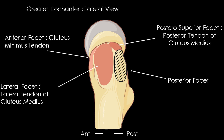The greater trochanter corresponds to a bony eminence of quadrilateral shape located outside the femoral neck. The superficial outer surface is convex and easily palpable under the skin. The bone surface of the greater trochanter consists of four facets: anterior, lateral, posterior, and posterior superior. Three of the four facets give insertion to the tendons of the gluteal muscles. The anterior facet gives insertion to the tendon of the gluteus minimus. The lateral facet gives insertion to the lateral tendinous lamina of the gluteus medius. The posterior superior facet gives insertion to the main tendon of the gluteus medius. The posterior facet is the only facet that does not give muscular tendon insertion; it is in contact with the gluteus maximus, the iliotibial tract, and the superficial trochanteric bursa.